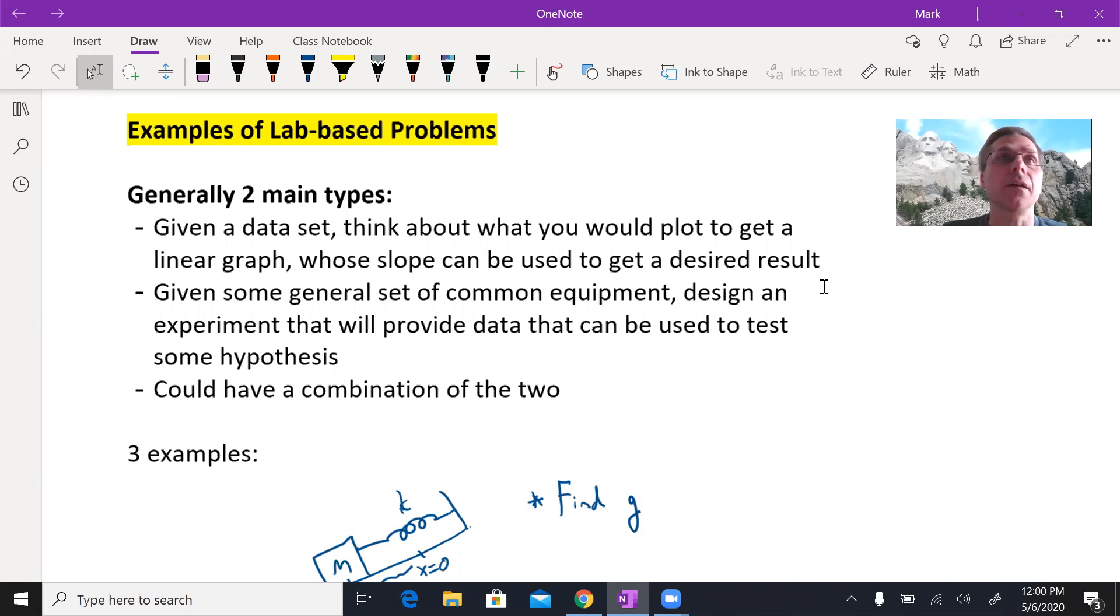Generally, lab-based problems, whether it's in a class, on an AP exam, or even in real life, how do scientists do their work? Often what we need to do is try and set up graphs. We want to plot data, measurements that you get from an experiment, such that you can extract the value of maybe an acceleration, or speed, or a spring constant, or something like that, a constant of proportionality that we use in science. How do you use data to do that? How do you use graphs to do that?